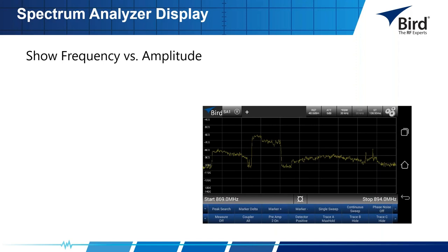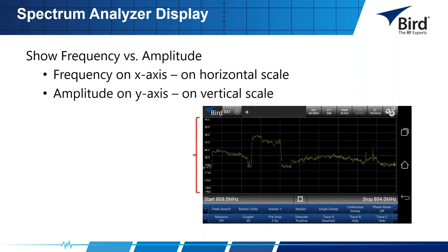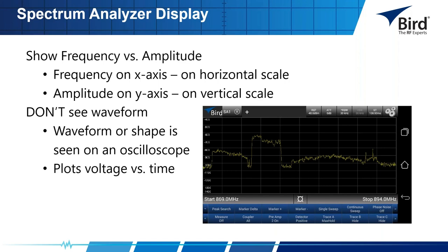This screenshot of the Signal Hawk serves as an introduction to the unit. The screen displayed is the frequency or span display, which allows the user to set up the unit to display a certain frequency range from a specific start frequency to a stop frequency. The unit can be set up using start and stop, center and span, or by selecting from predefined measurements. Frequency is on the x-axis and amplitude is on the y-axis. The waveform shape seen on an oscilloscope — which plots voltage versus time — is not seen here.